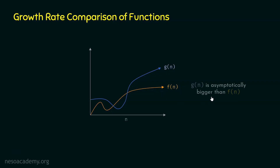In other words, G(n) is asymptotically bigger than F(n). When we say G(n) is asymptotically bigger than F(n), we mean that G(n) is not always bigger than F(n), but after some point it is — or in other words, as n approaches infinity, G(n) is bigger than F(n). This is the meaning of asymptotically bigger.